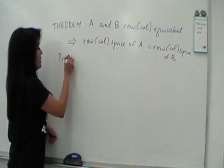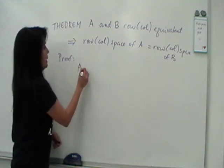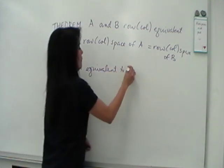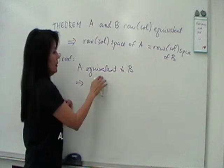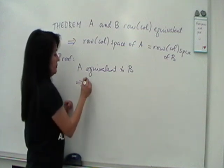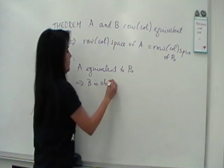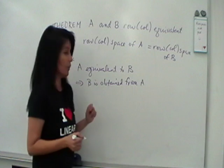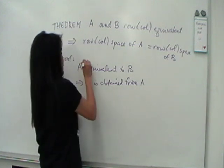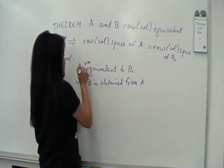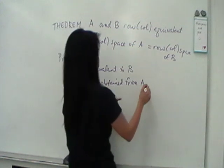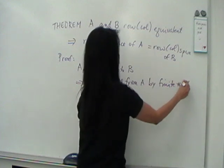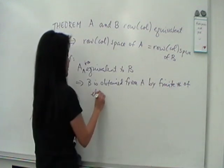So if we look at the proof of this, if you know that A is row equivalent to B, then really that means to say that you get B from A. B is obtained from A by applying a finite number of elementary row operations.